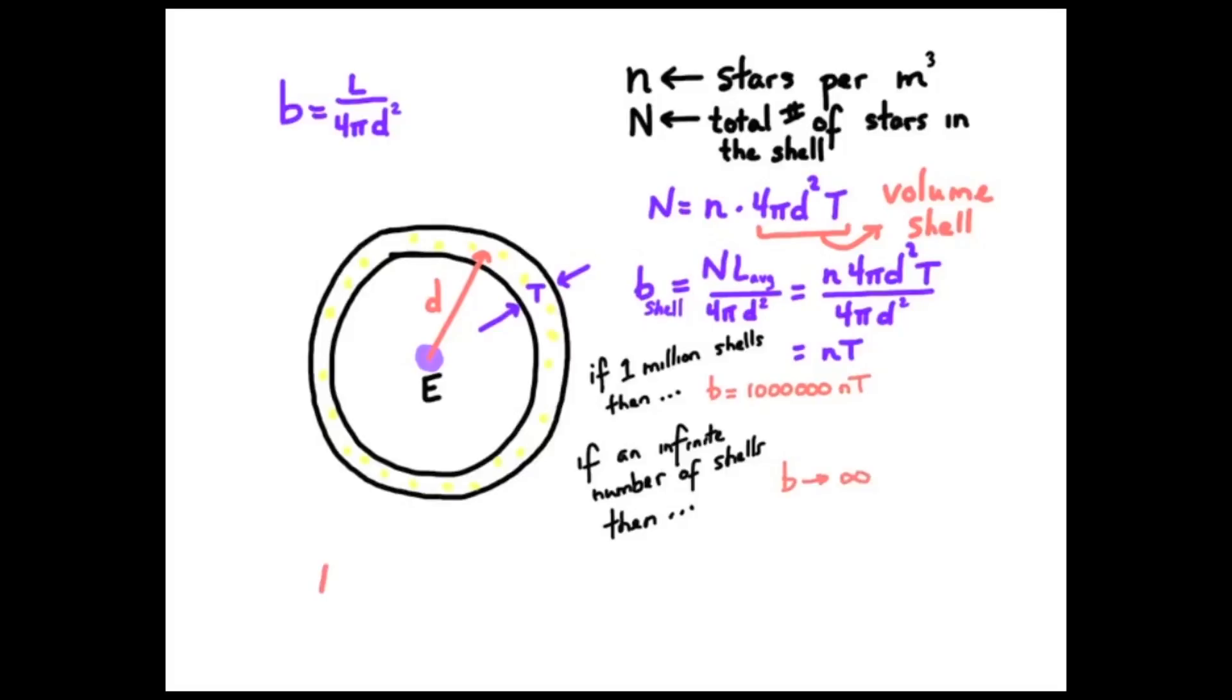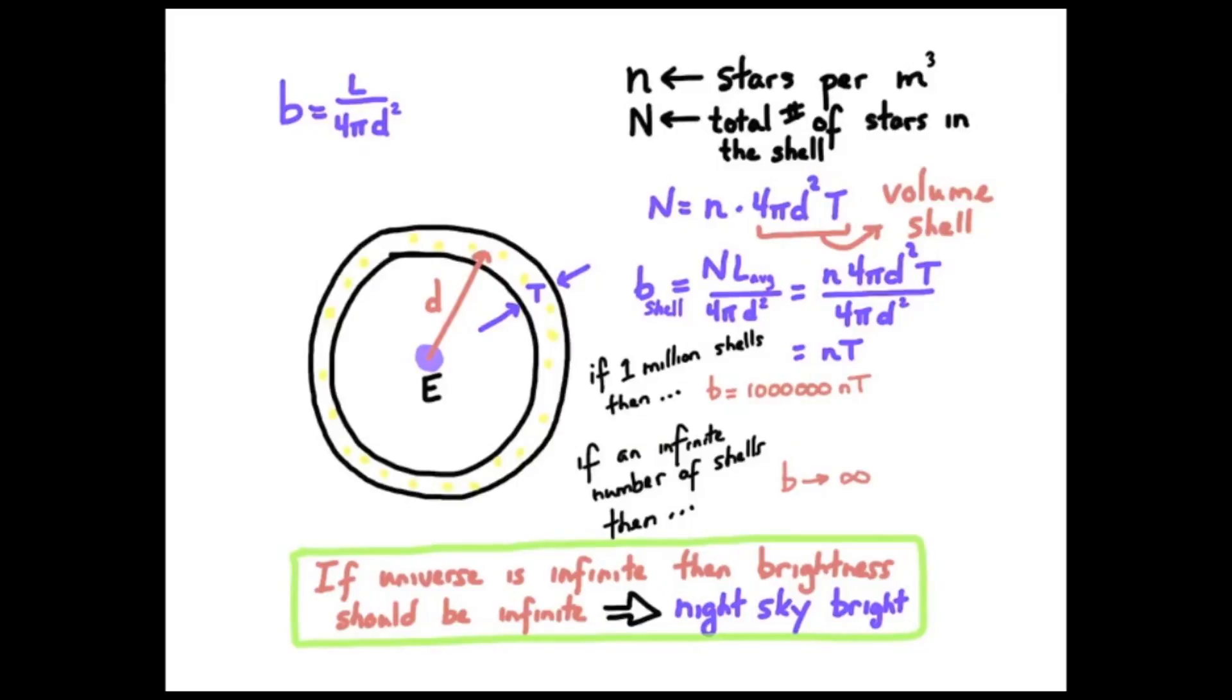So this was Olber's paradox, and that is if the universe is infinite, then the brightness would also be infinity from that infinite number of stars, and therefore the night sky should be bright, shouldn't be dark at night.